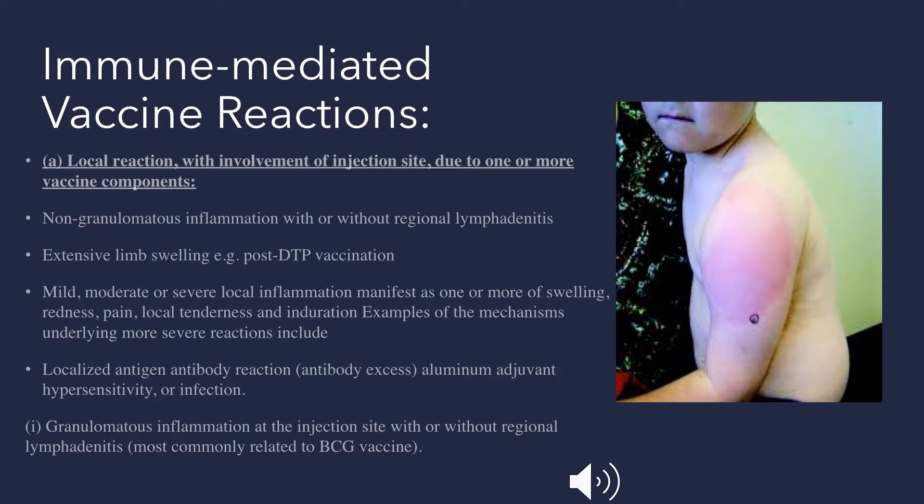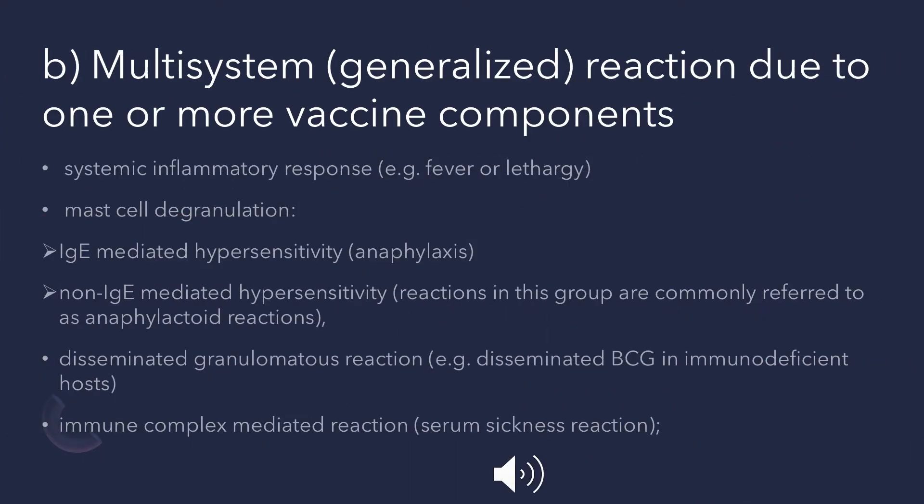Some people may develop hypersensitivity reactions, whereas granulomatous inflammation is usually seen with the BCG vaccine. The second type are multi-system or generalized reactions, where one or more vaccine components cause a systemic inflammatory response resulting in fever or lethargy. Degranulation of mast cells can cause hypersensitivity reactions, which may be IgE-mediated or non-IgE-mediated. BCG vaccine typically causes granulomatous reactions, and disseminated granulomatous reaction develops in immunodeficient patients. Immune complex-mediated reactions like serum sickness reaction may also occur.